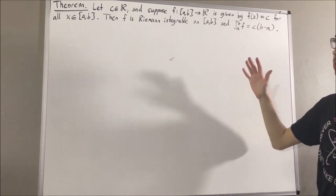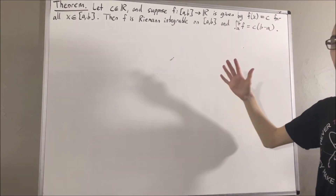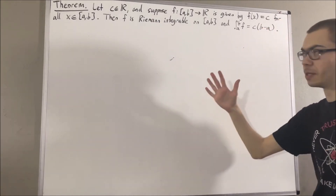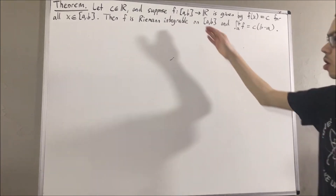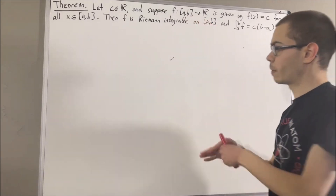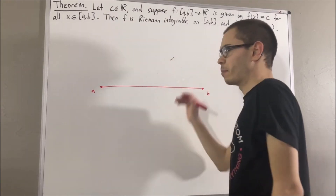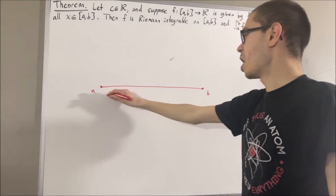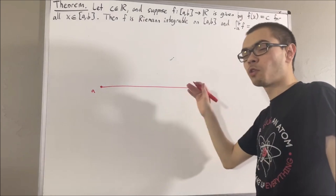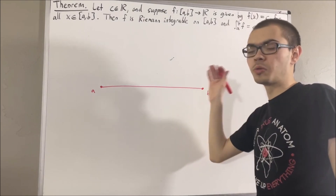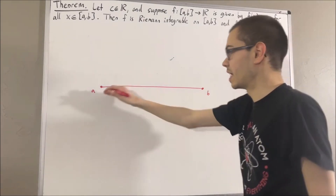Now, let's first remind ourselves the definition of a partition of an interval. Consider our closed interval [a, b]. A partition of [a, b] is a collection of non-overlapping closed intervals whose union is [a, b].